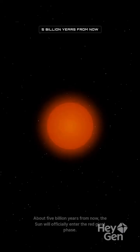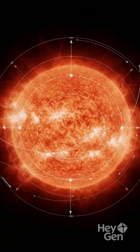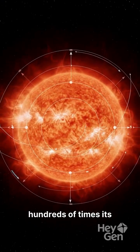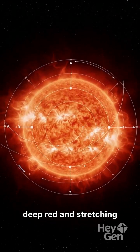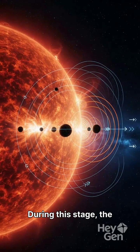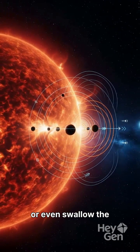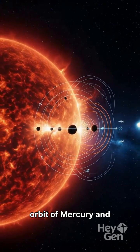About 5 billion years from now, the Sun will officially enter the red giant phase. It will swell to hundreds of times its current size, glowing a deep red and stretching far into the inner solar system. During this stage, the Sun's radius may grow large enough to reach, or even swallow the orbit of Mercury and Venus.